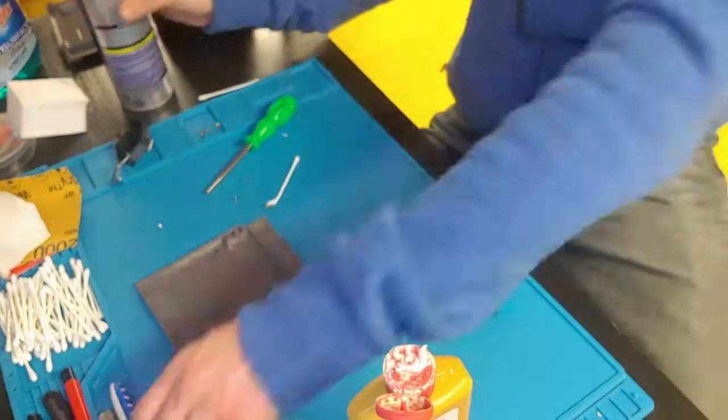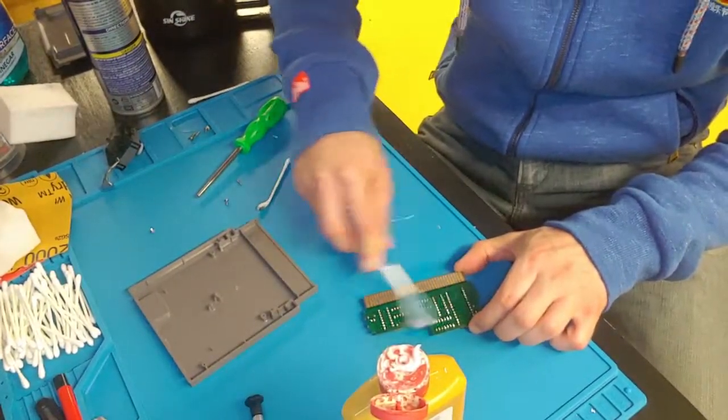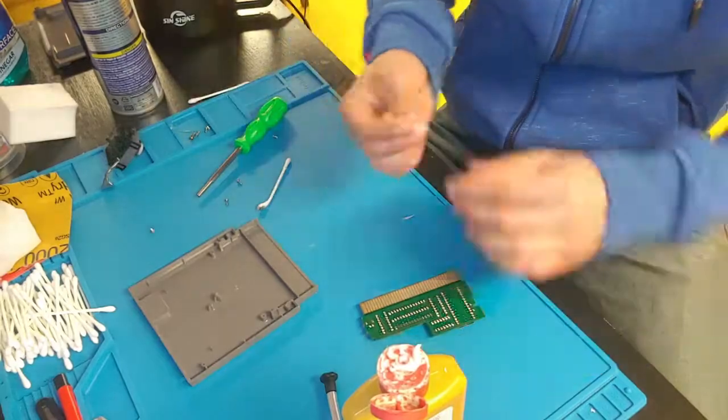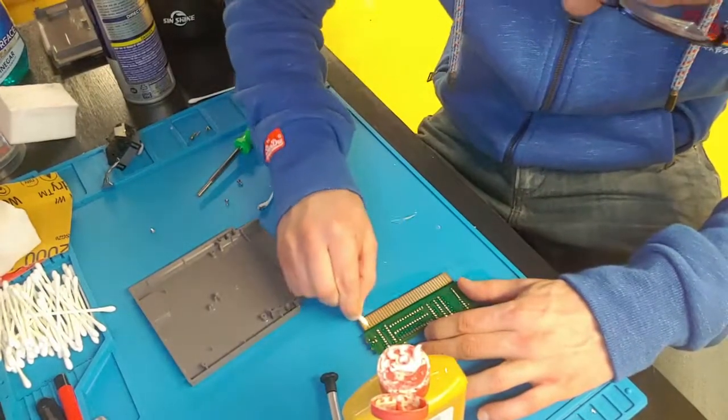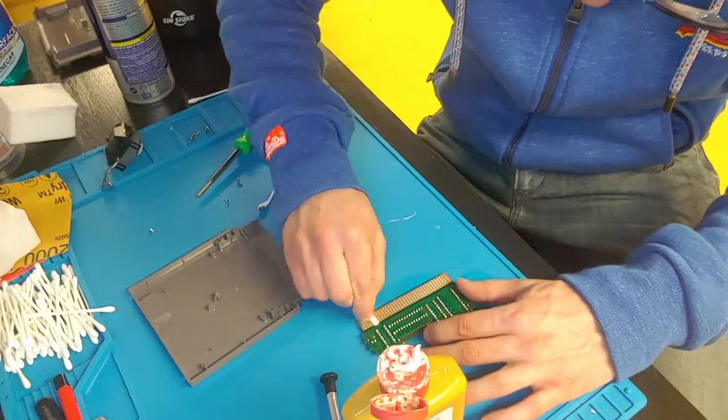Here we're going to grab that contact cleaner and instead of just the Q-tip this time, we're going to spray the whole board down. It's like we said, it's very, very important to remove all of the Brasso.